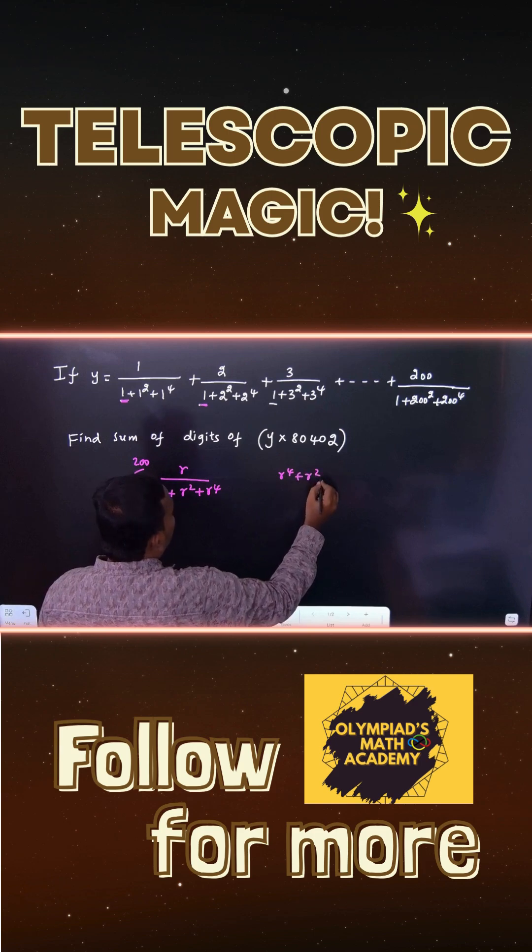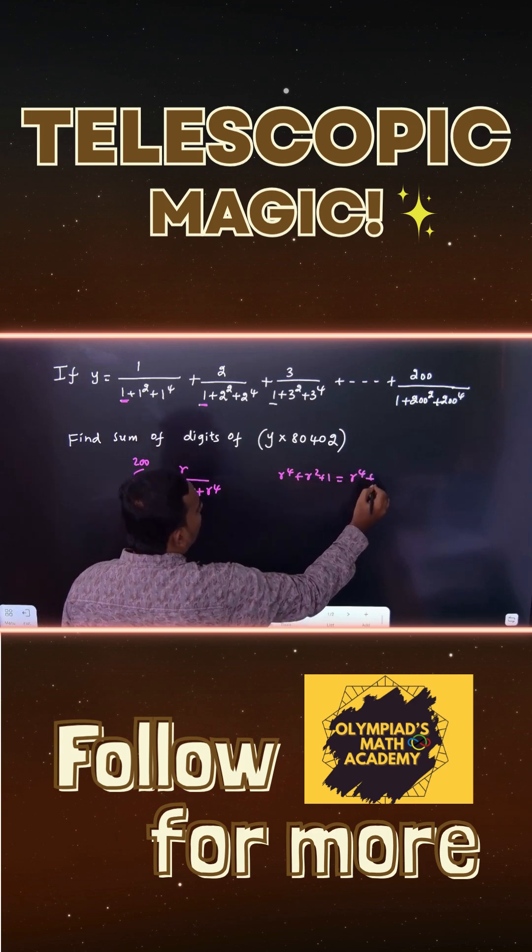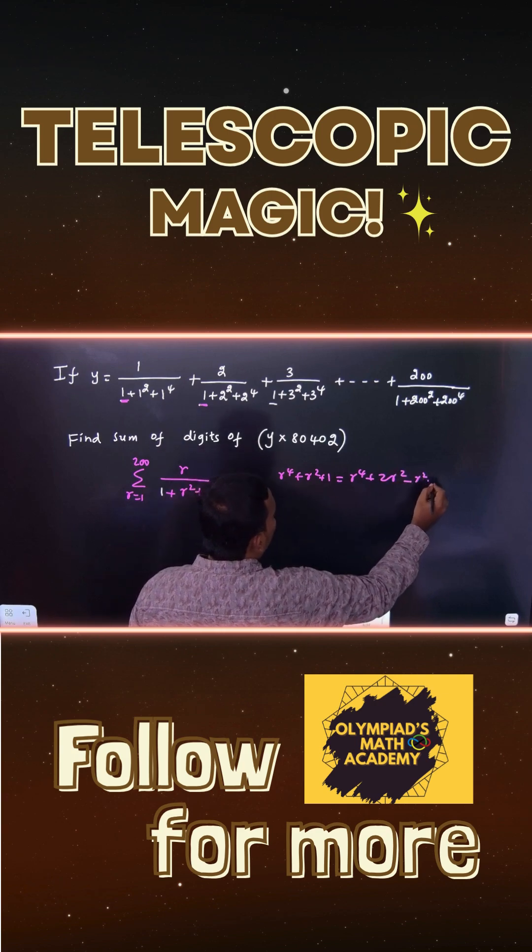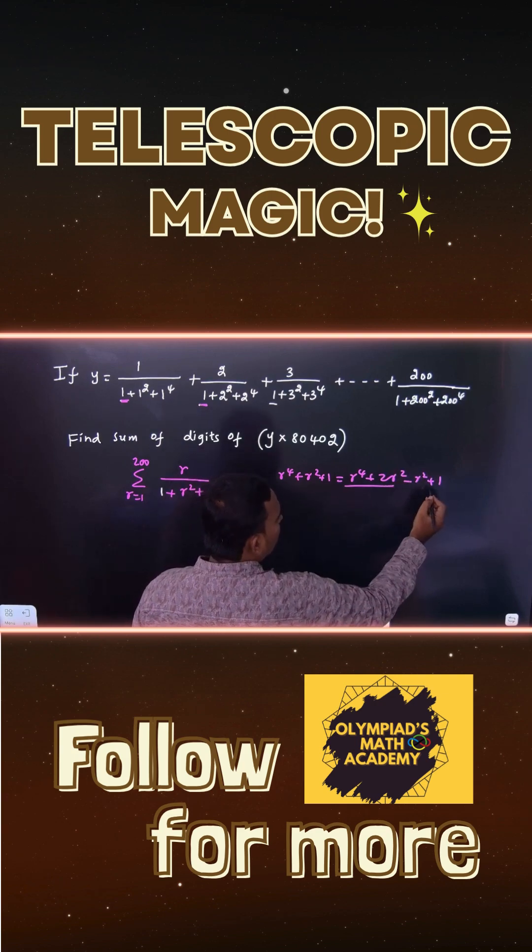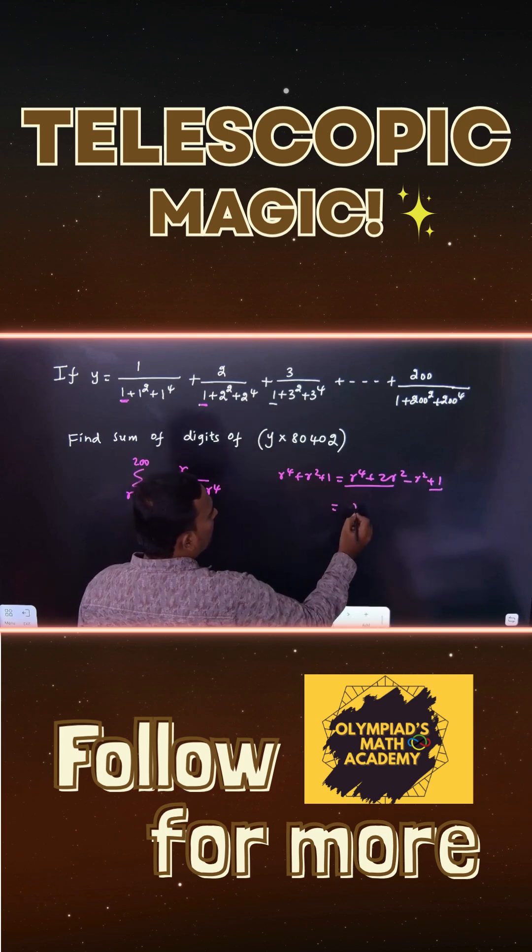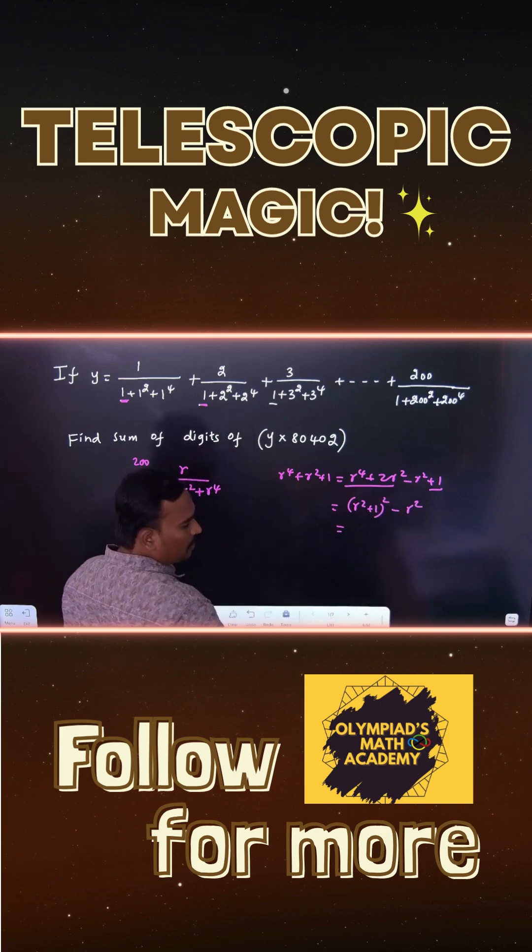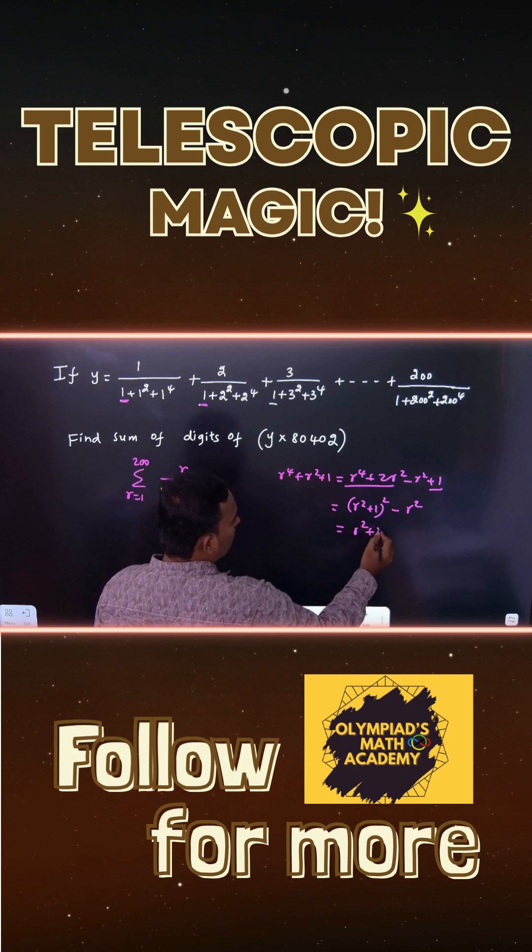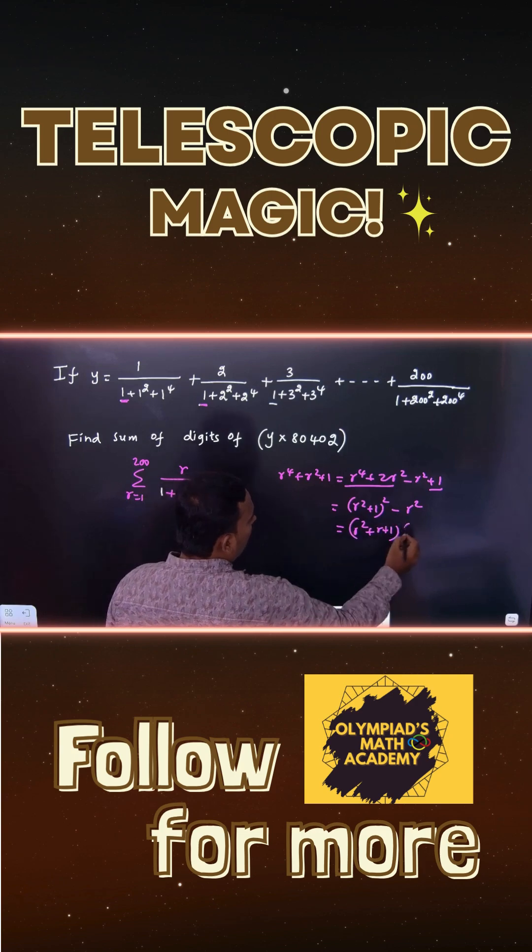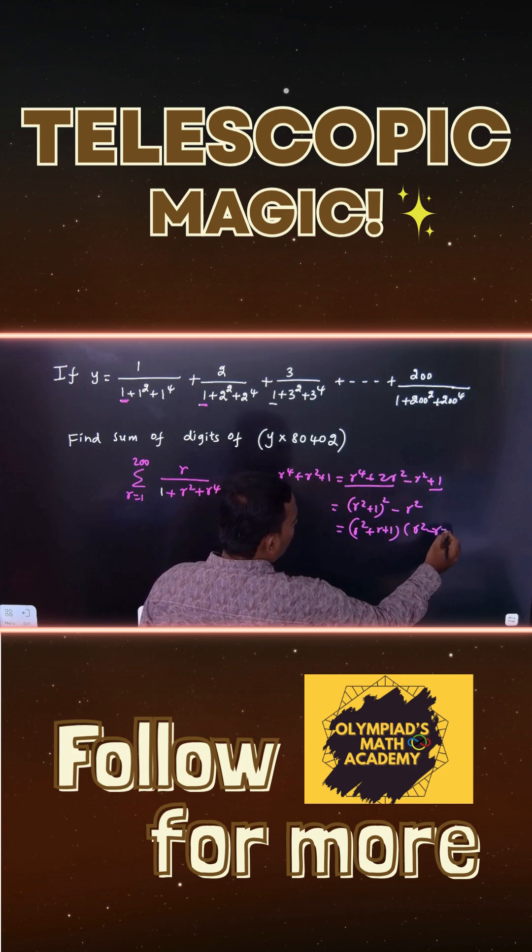r to the power 4 plus r squared plus 1. How to write? r to the power 4 plus 2r squared minus r squared plus 1, we can write. The first two terms and last term, you can group it. You can write (r squared plus 1) whole squared minus r squared. This is a squared minus b squared formula: (r squared plus r plus 1)(r squared minus r plus 1), we can write.